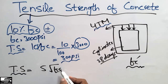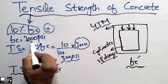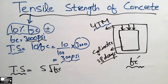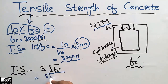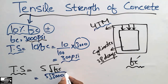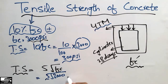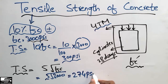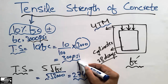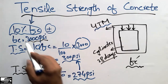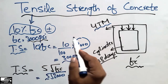For the same example with a compressive strength of 3,000 psi, putting the value into the formula — 5 × √3,000 — we get a tensile strength of 274 psi. This is almost equal to the 300 psi obtained using the 10 percent of compressive strength approach.